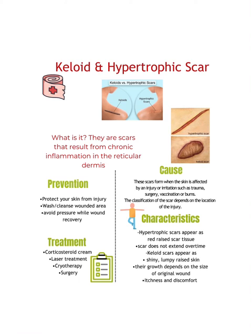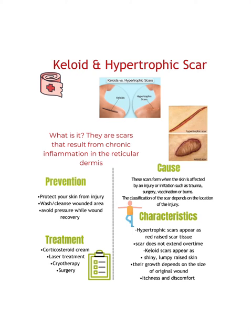A few of the characteristics for hypertrophic scars are they are red, raised scar tissue and the scar does not extend over time, while keloid scars appear as shiny, lumpy, raised skin and their growth depends on the size of the original wound, as well as itchiness and discomfort is said to be felt.